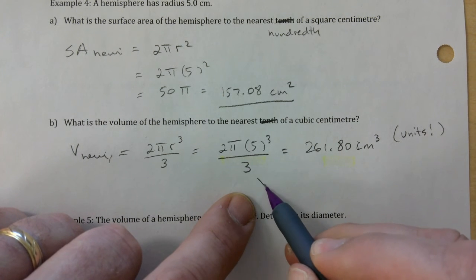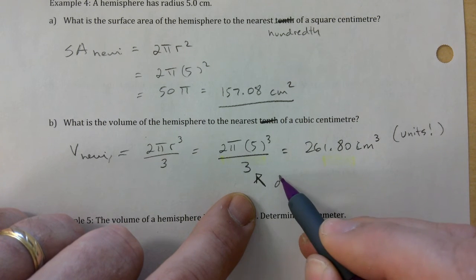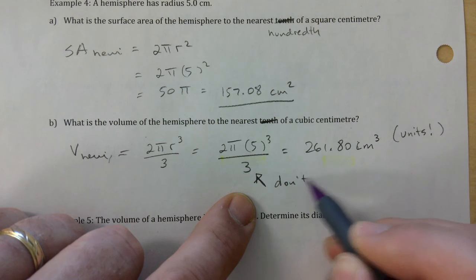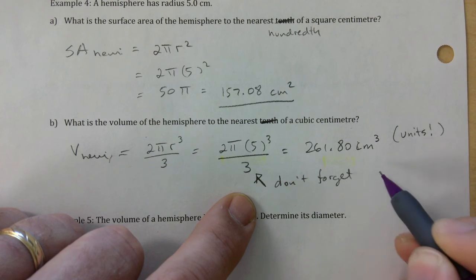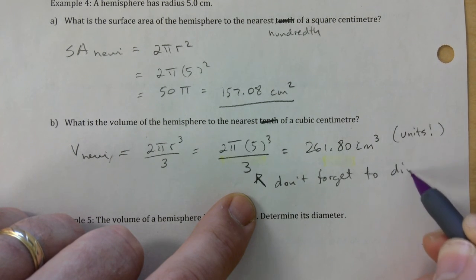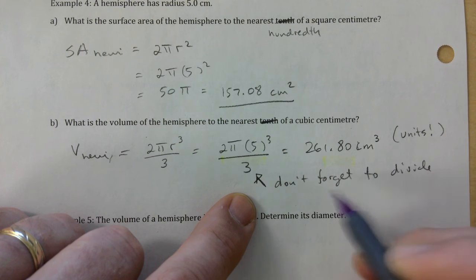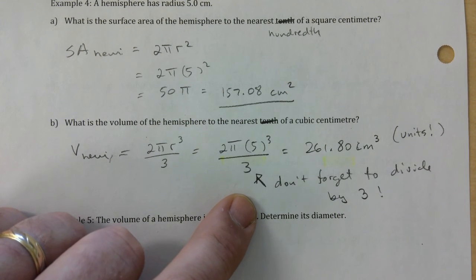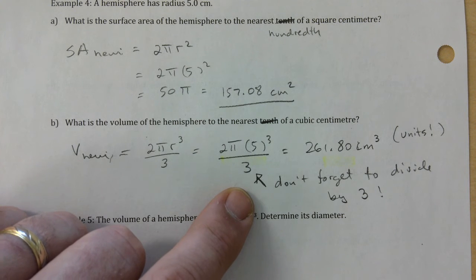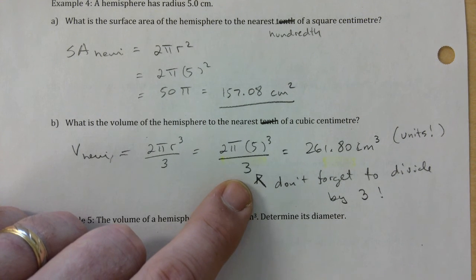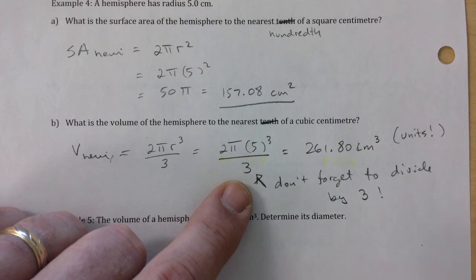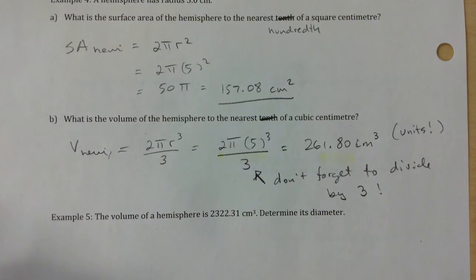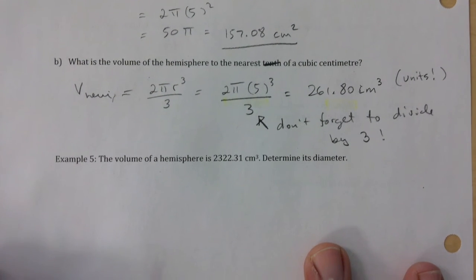Don't forget to divide by three — it's so common a mistake that my answer key actually has both numbers: the answer without dividing by three, because then I know that's what you missed. So try not to forget about it.